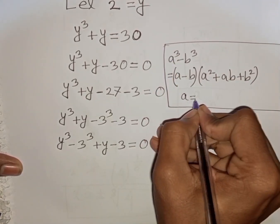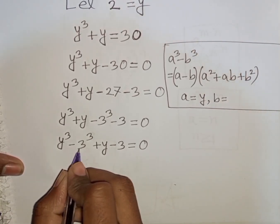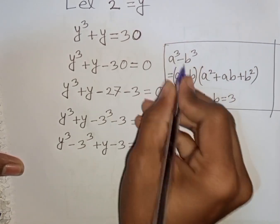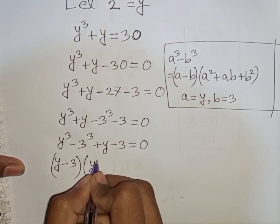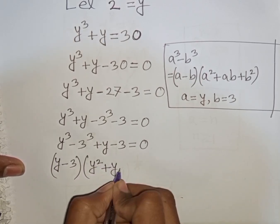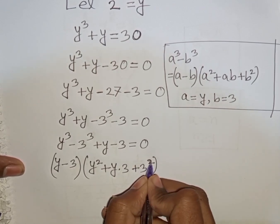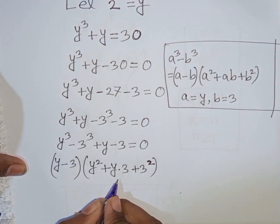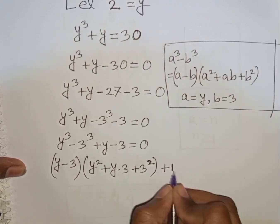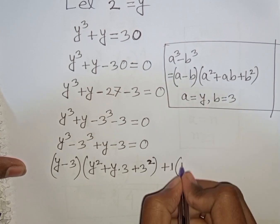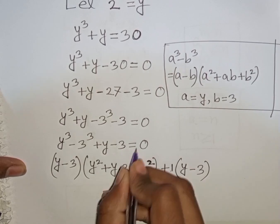Here a equals y and b equals 3, so according to this formula I can write: y minus 3, times y squared plus y times 3 plus 3 squared. Then for the remaining term, y minus 3, we factor out 1, giving plus 1 times y minus 3, is equal to 0.